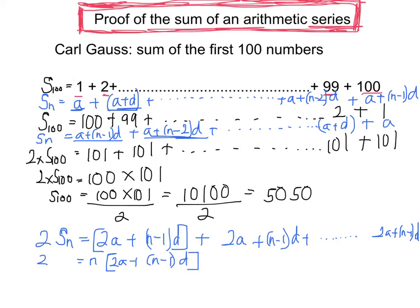Now, remember that's 2 lots of sn. But if I just want the sum to n terms, I want that on its own. So I'm going to bring the 2 over, which gives me sn equals n divided by 2, times 2a plus n minus 1d.